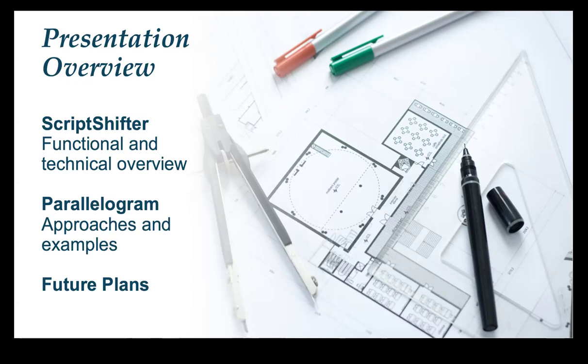In this session, we will dive into ScriptShifter, an open source software developed by the Library of Congress to transliterate non-Latin scripts to Latin scripts using the ALA-LC romanization tables and reverse transliteration in some cases. Then we will showcase how this tool is being put to practical use in the real world. Specifically, we will introduce the Parallelogram Cloud app for Alma, which leverages ScriptShifter's language rules and data to enhance bibliographic records. This app draws from trusted sources like WorldCat and LC name authority file to create accurate parallel fields in non-Latin script bibliographic records. We will wrap up by sharing some thoughts for the future plans.